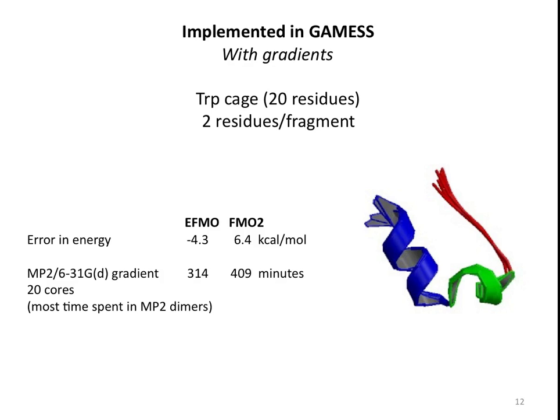When we calculate the energy fully MP2 and compare it to the EFMO energy and the FMO2 energy, the error in the total energy is 4 kilocalories per mole for EFMO and 6 kilocalories per mole for FMO2. I should notice here, and this is important, that what I call a monomer now in this calculation is actually two residues. You get much worse results if you only have one residue per monomer. And that's because if I can go back here—